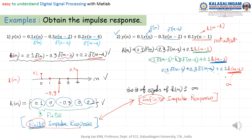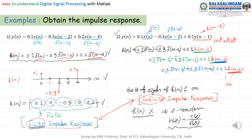Since the number of impulse response terms is infinite, we cannot directly represent h(n). So what shall we do — how to find this impulse response? For this, we need the Z-transform. If we use the Z-transform: H(z) = Y(z) / X(z). From this you can obtain the impulse response.